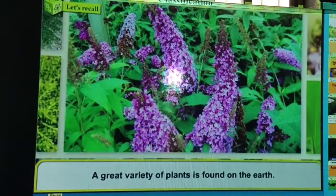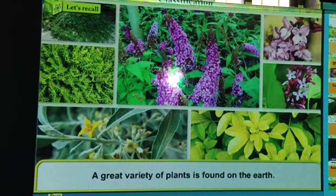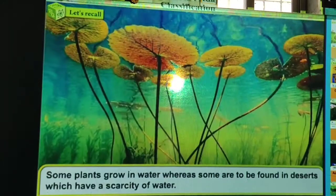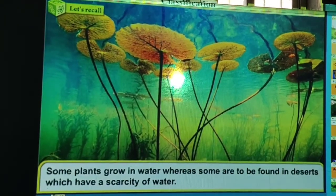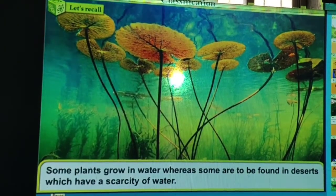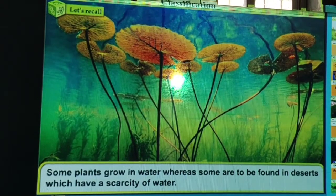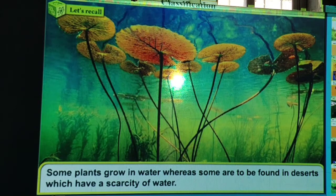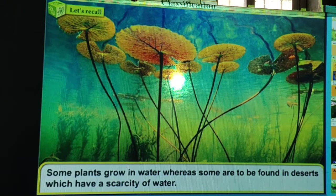A great variety of plants is found on the earth. Some plants have colorful flowers; some plants grow in water. On the earth we can see lots of diversity in plants as well as in animals. Diversity means different plant species and different animal species we can see in our surrounding area as well as across the whole earth.